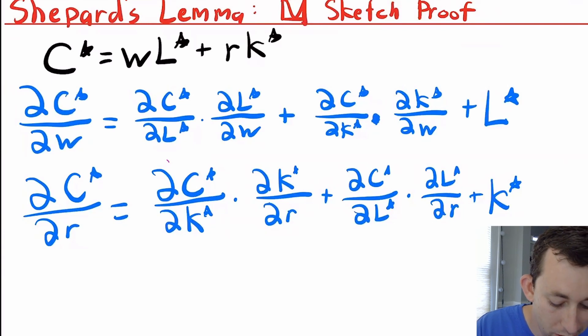This part here is just how much your cost function or how much your optimal cost changes when you change the number of capital operating through the change in wage. And this is just L star because if the price of labor goes up, I have to pay each person that I have already hired an increased amount, so that L star right there.